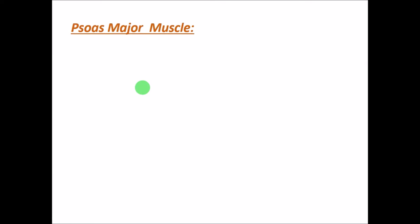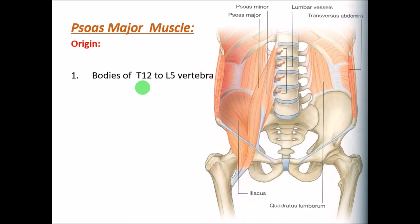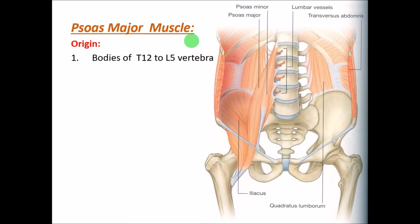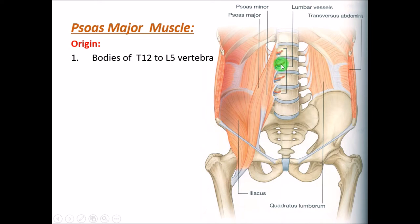The psoas major muscle takes origin from the bodies of the T12 to L5 vertebrae — starting from the 12th thoracic vertebra and then L1, L2, L3, L4, and L5. So from all five lumbar vertebrae as well as the 12th thoracic vertebra, from the bodies of these vertebrae, this muscle takes its origin.